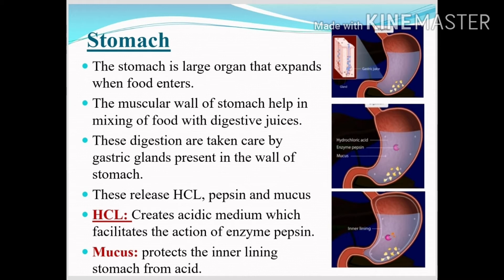From the esophagus, food enters into the stomach. The stomach is a large organ that expands when food enters. The muscular wall of the stomach helps in mixing food with digestive juices, and this digestion is taken care of by the gastric gland, which is present in the wall of the stomach. The gastric gland secretes hydrochloric acid, the enzyme pepsin, and mucus. Hydrochloric acid creates an acidic medium which facilitates the action of enzyme pepsin, and mucus helps to protect the inner lining of the stomach from the acid.